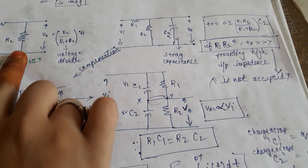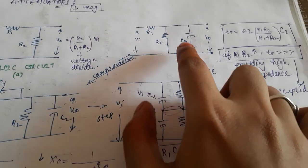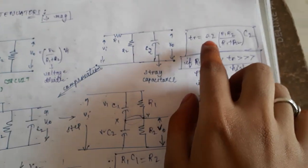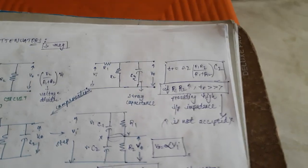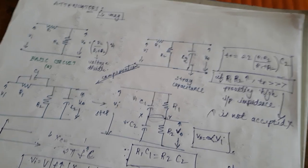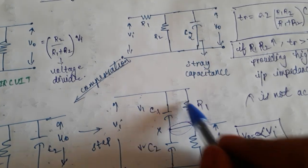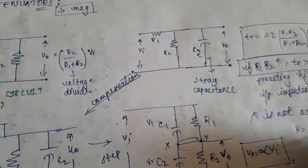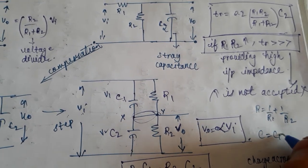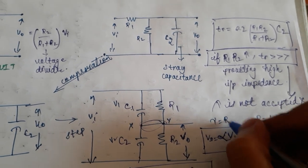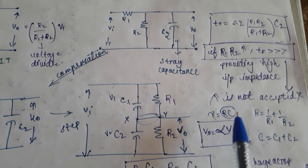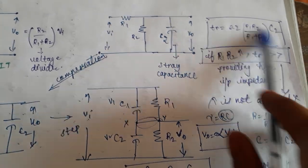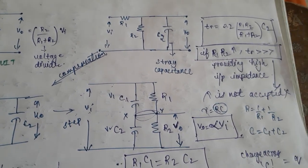This circuit can hence be used for attenuation. One drawback is stray capacitance being added. However, by using this compensated circuit, the rise time can be made exponential in RC. If we consider R as the parallel combination of R1 and R2 — that is, (1/R1 + 1/R2)⁻¹ — and C = C1 + C2, the rise time becomes exponential of RC, eliminating the previous rise time problem.